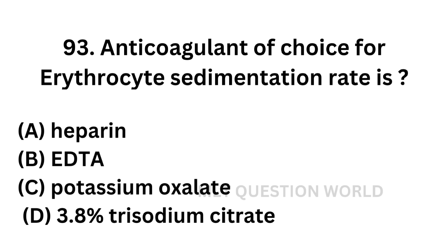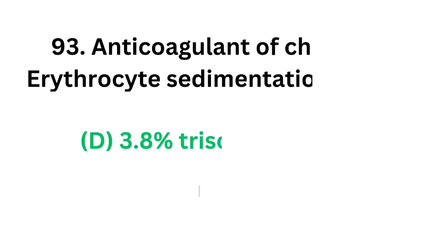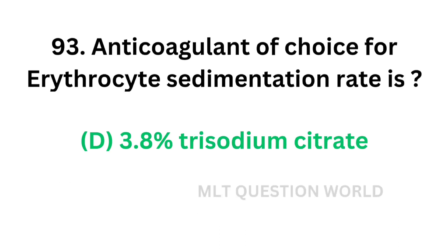Question number 93: Anticoagulant of choice for erythrocyte sedimentation rate is. Option A: heparin. Option B: EDTA. Option C: potassium oxalate. Option D: 3.8% trisodium citrate. This is a simple question — 3.8% trisodium citrate is used for ESR estimation. So the correct answer is Option D, 3.8% trisodium citrate.